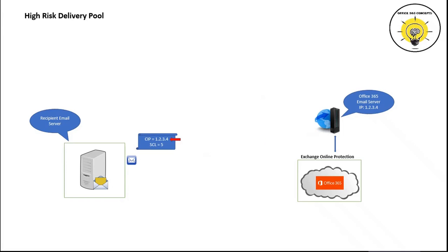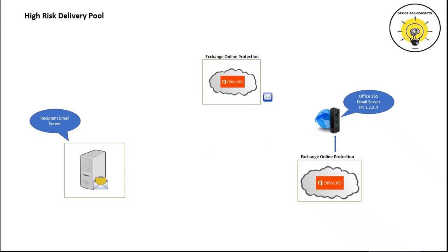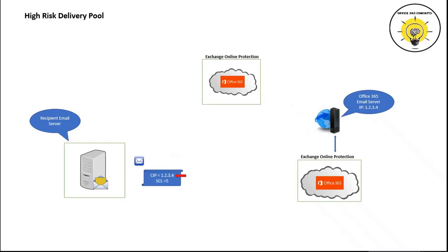Moreover, the recipient email server will add the connecting IP address within its low reputation IP address list, because this IP address belongs to an email server that has processed a spam or bulk email. Now let's assume that if a user from another Office 365 tenant will send a legitimate email and if this email will be processed by the same email server, in that case the recipient server will not accept this email because this email was processed by an email server that has a low reputation IP address.